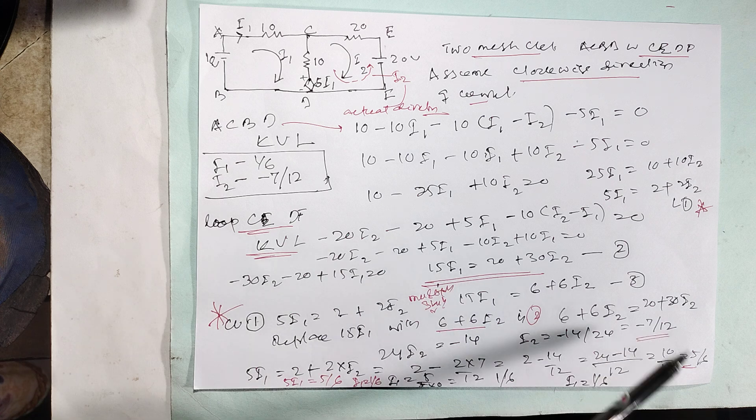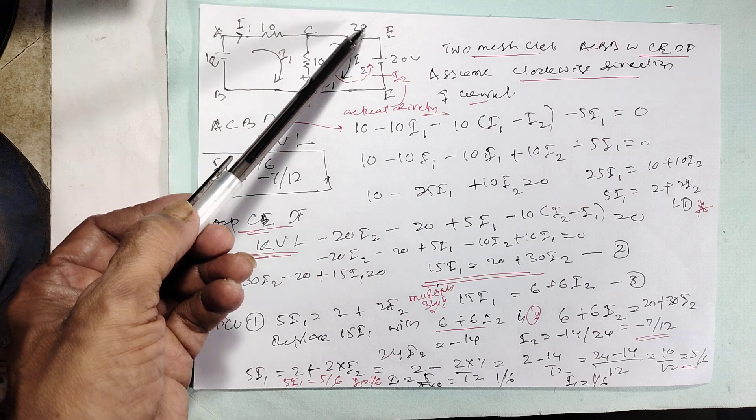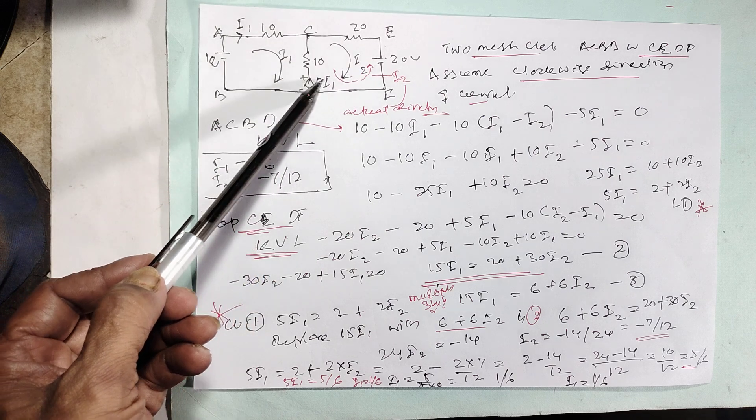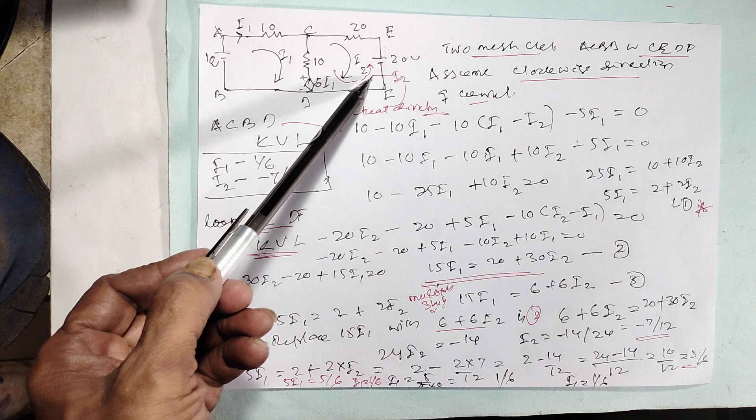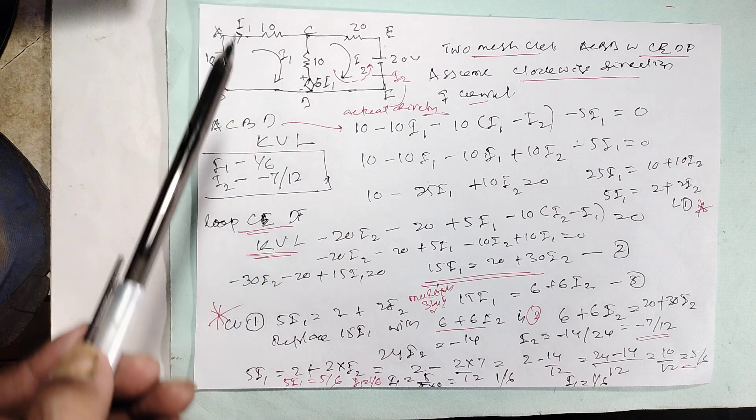Then simplify, I2 is coming minus 7 by 12. What is the meaning of minus 7? That means we assumed clockwise. Actually in this case, it is going anti-clockwise. That's why I put a red color arrow. This is the actual position. It is anti-clockwise. This is clockwise.